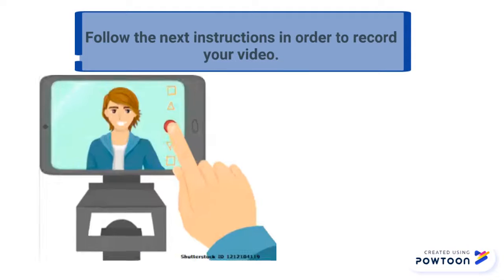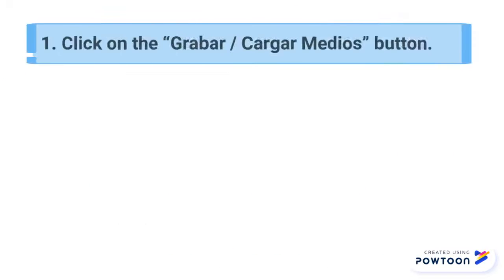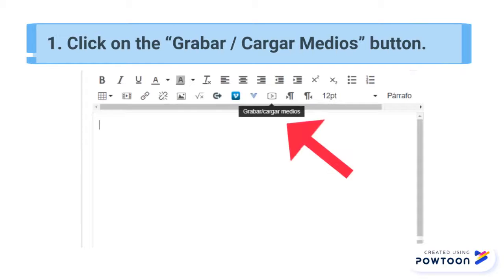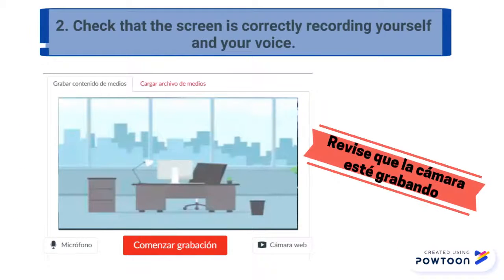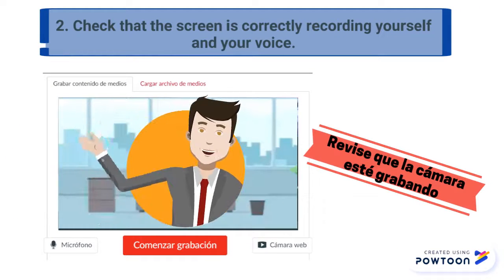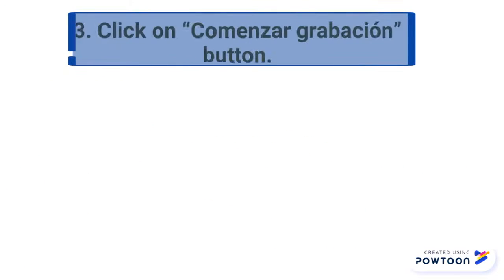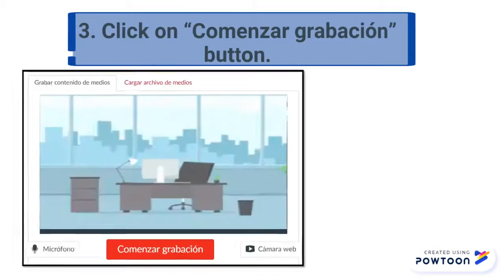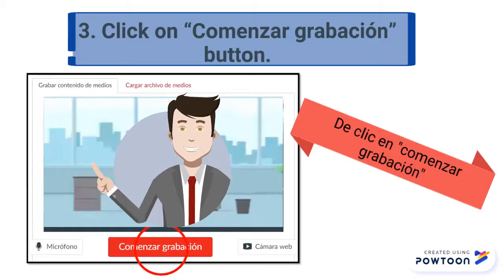Follow the next instructions in order to record your video. Number one, click on the Grabar Cargar Medios button. Number two, check that the screen is currently recording yourself and your voice. Number three, click on Comenzar Grabación button.